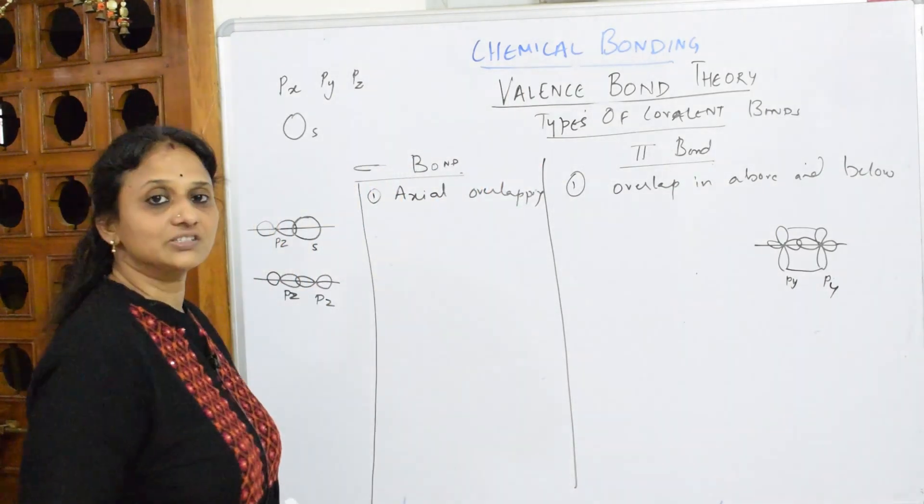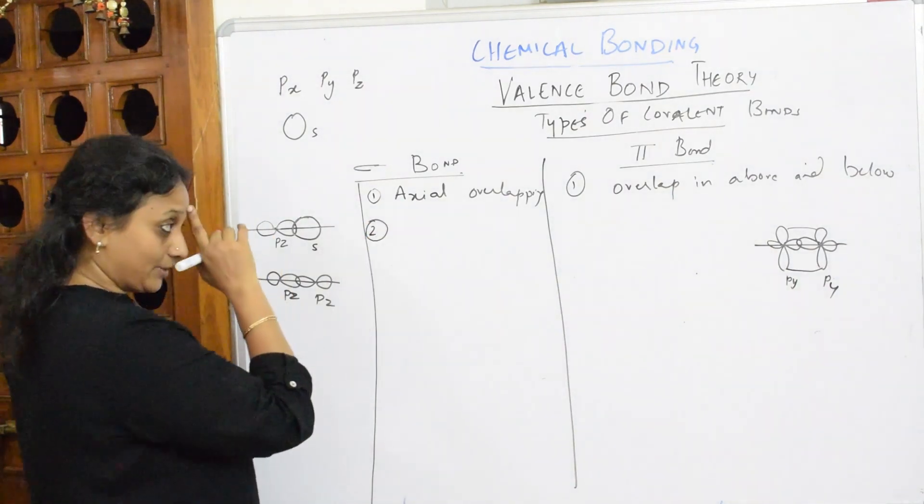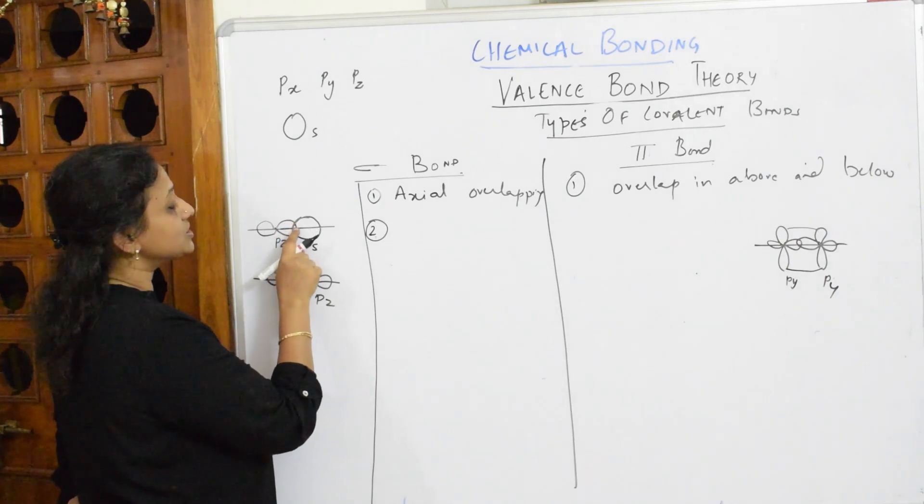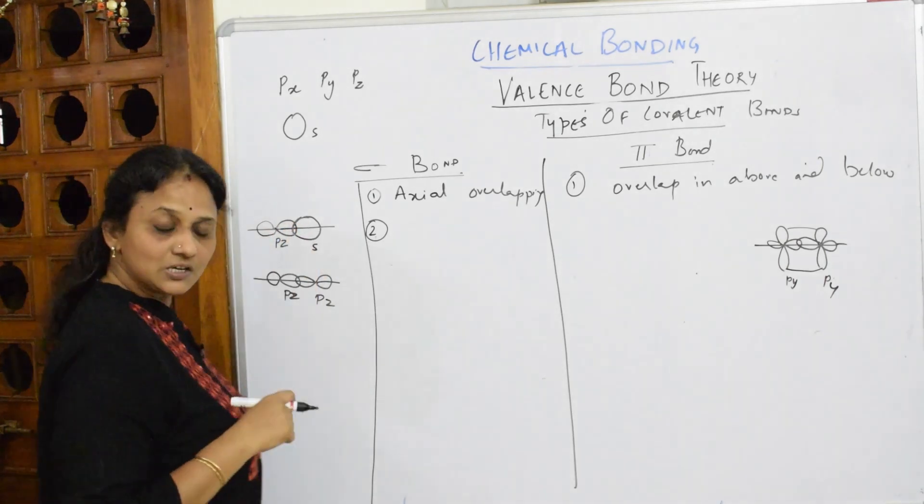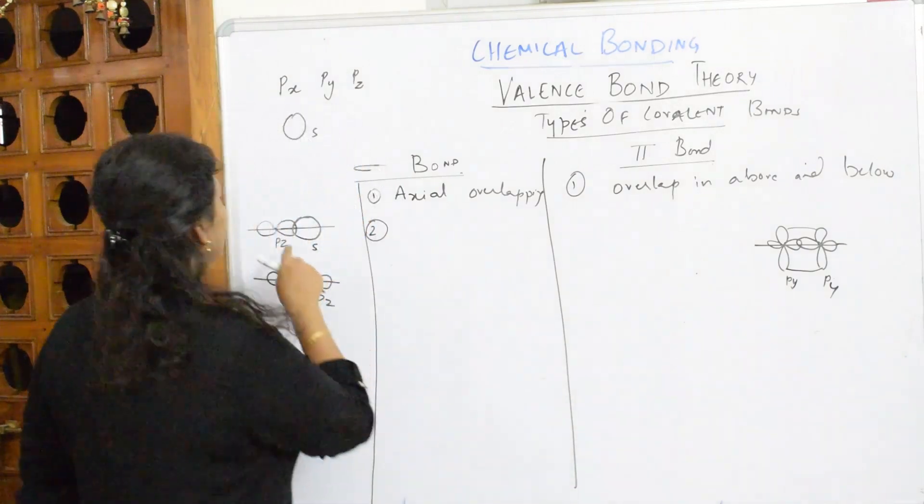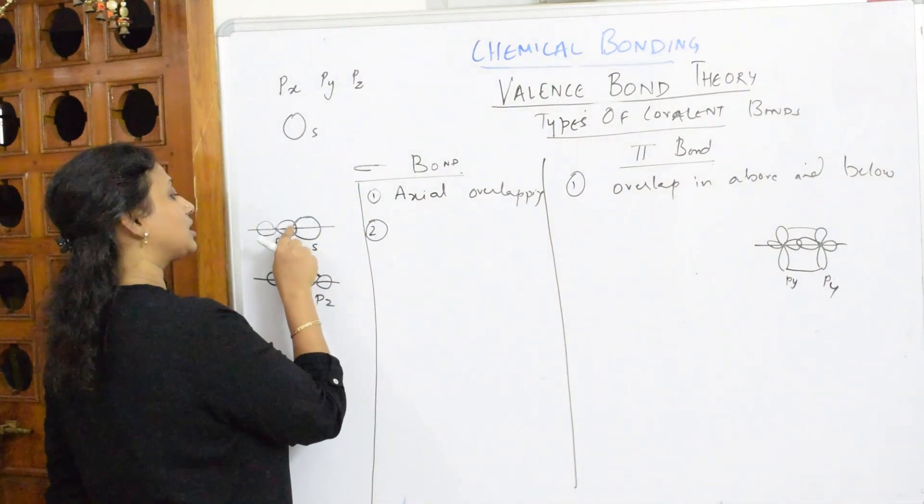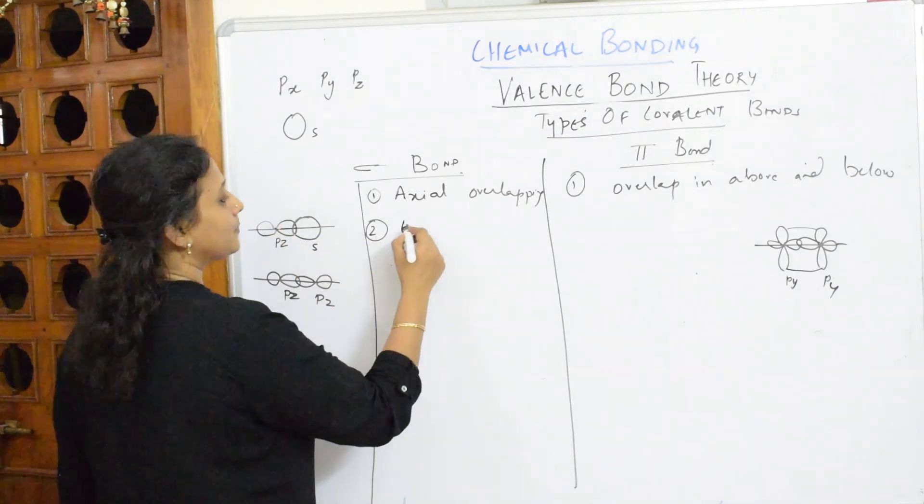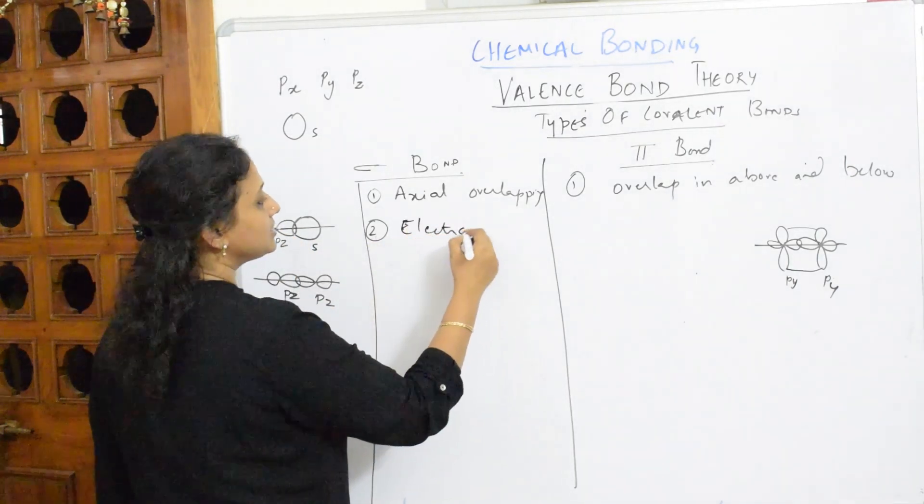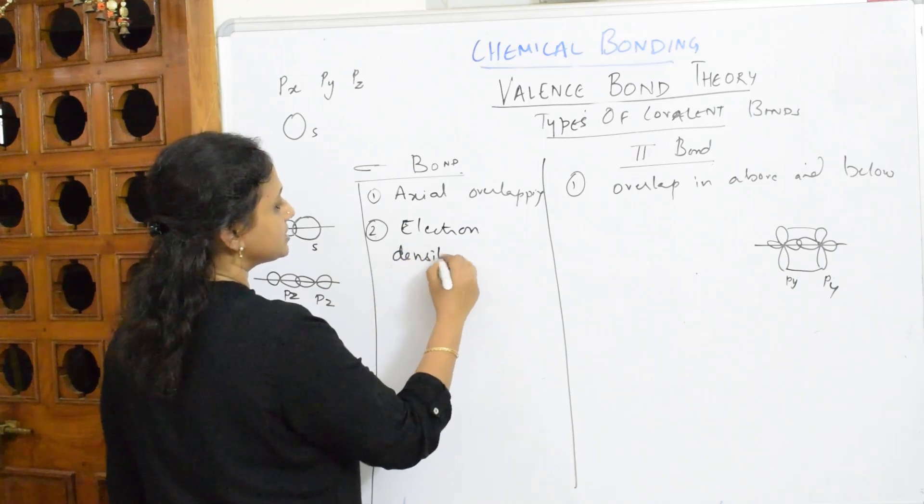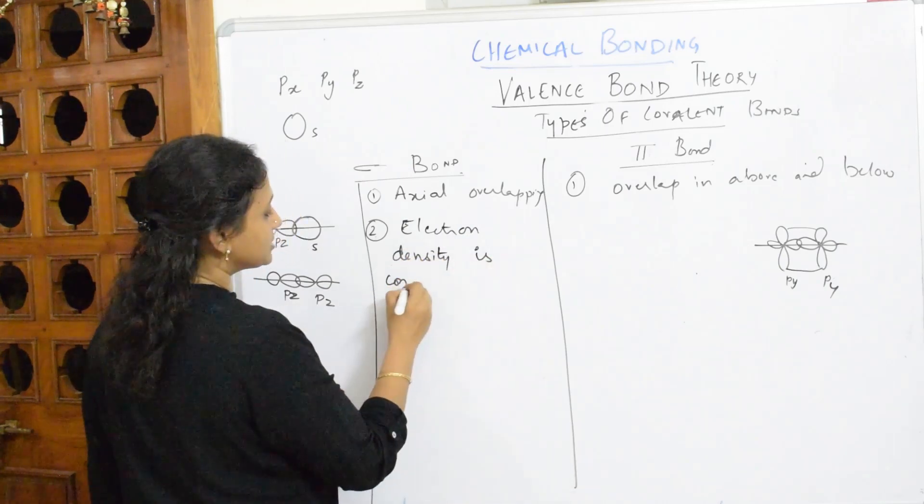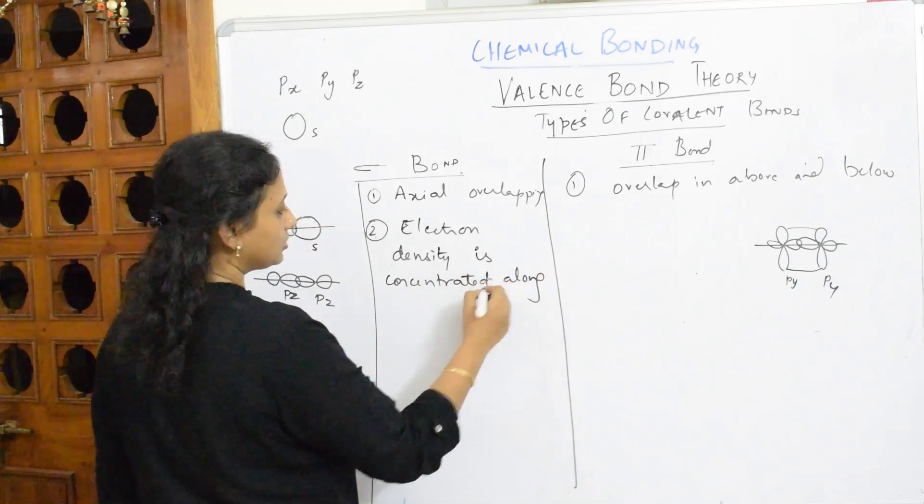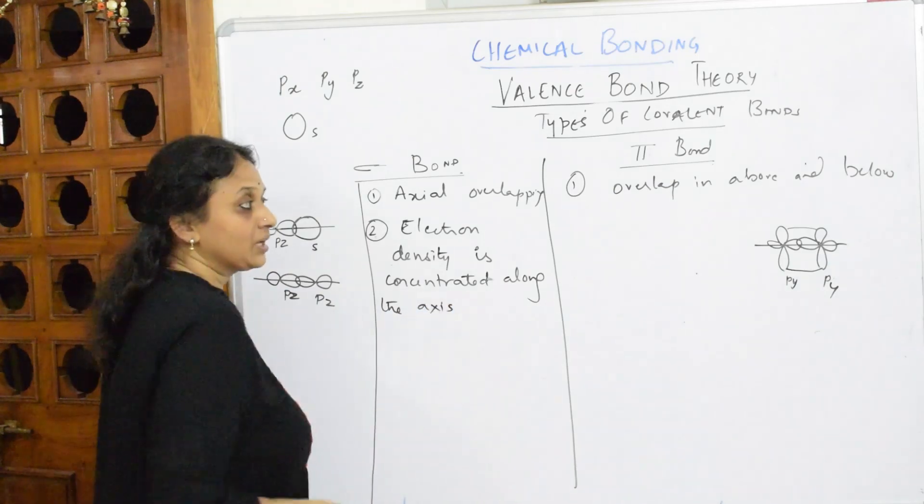When I speak about sigma bond, where is the electron density concentrated? The electron density is concentrated along the axis. Isn't it stronger than pi bond? Yes. As you have seen, the whole electron cloud or electron density is concentrated here because it is tightly packed in the center. So electron density is concentrated along the axis.